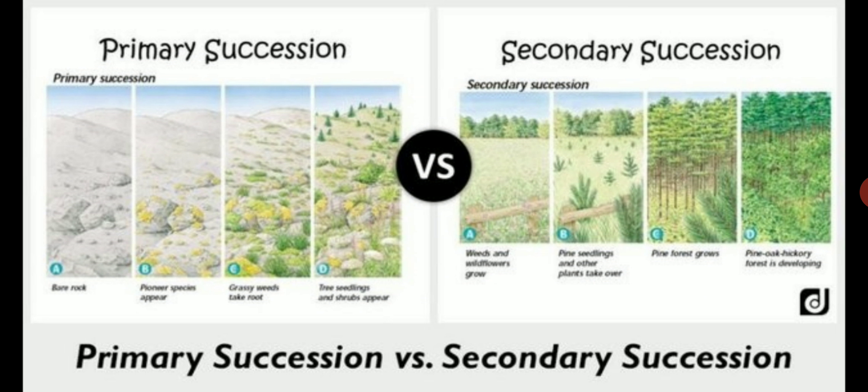Secondary succession occurs when an existing community is disrupted and a new one subsequently develops at the site. For example, an abandoned crop field or a clear-cut forest. Disruption may be due to some natural catastrophe like fire, or by human activity like deforestation. The bare soil is first colonized by rapidly growing annual plants because they can tolerate full sunlight, exposed soil, and have light wind-blown seeds.